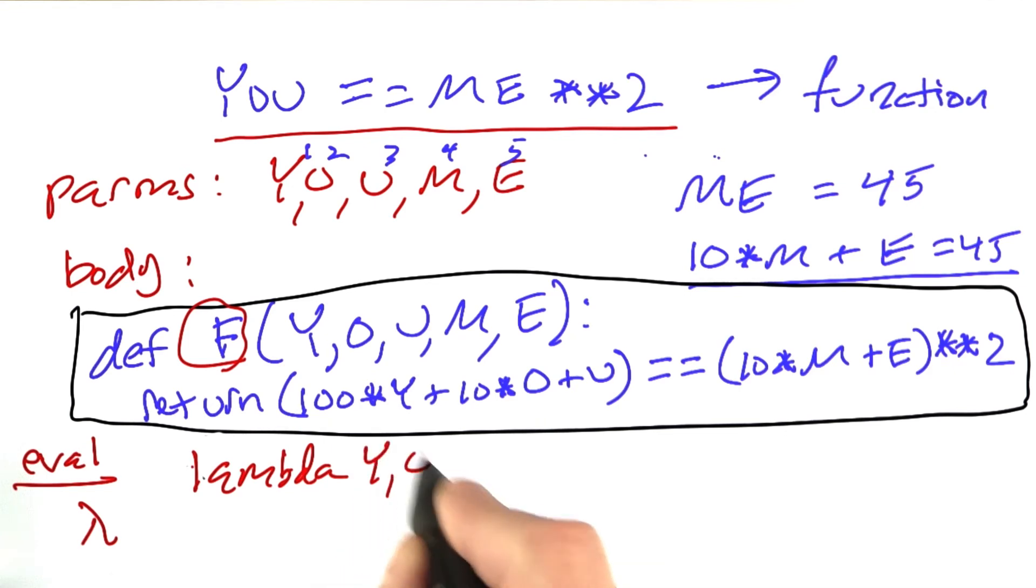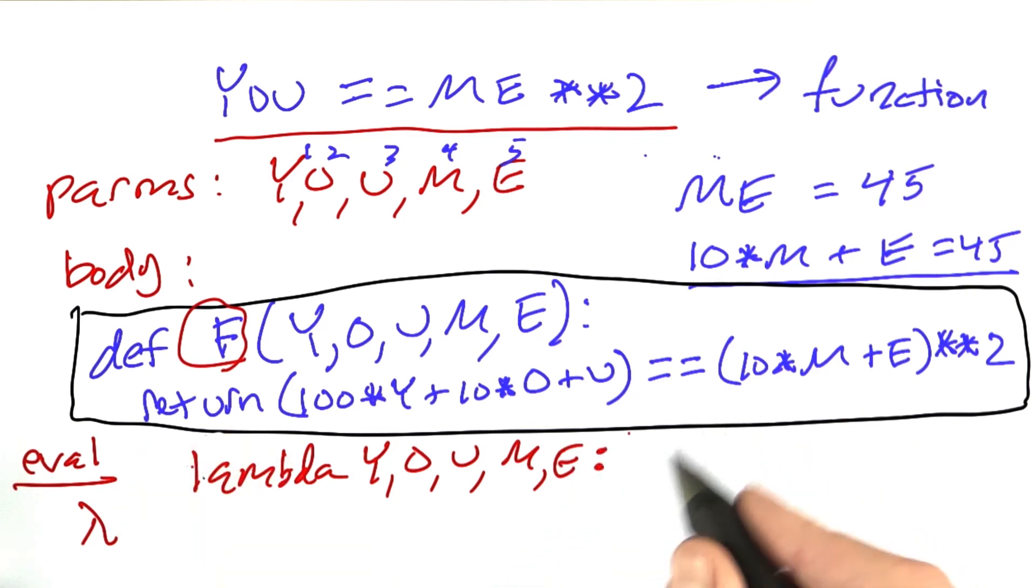We just say lambda y-o-u-m-e, then a colon, and we leave out the return, and then we just put in the rest of the code 100 times m plus e squared.